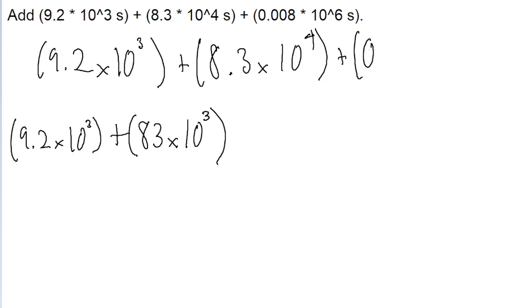So we want to do the same thing for the third number we're given, which is 0.008 times 10 to the power of 6. So again, we can lower the power, we can lower the 6 to a 3 so that we can just add the coefficients.